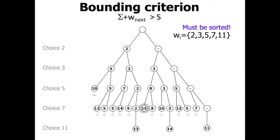In this way, we use a branch and bound strategy to find the optimal solution. We can also use the solution space, so we can use backtracking.